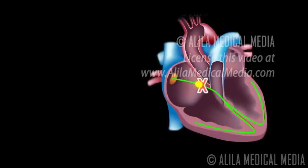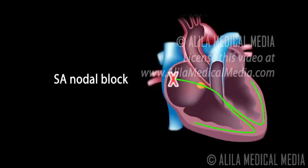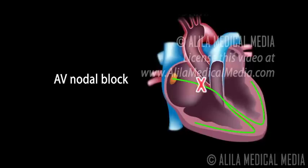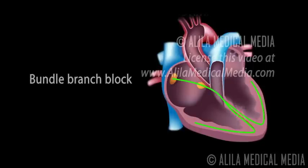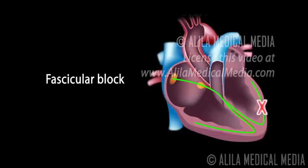Heart blocks are classified by the location where the blockage occurs. SA nodal block, or SA block: blockage within the SA node. AV nodal block, or AV block: blockage at the level of the AV node. Intrahisian block: blockage within the bundle of His. Bundle branch block: blockage within the left or right bundle branches. Fascicular block: blockage within the fascicles.